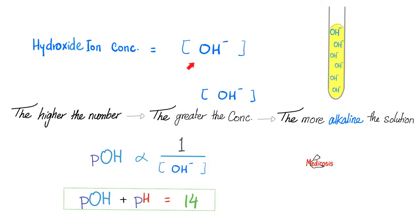Hydroxyl ion concentration. Well, the higher the number, the greater the concentration of hydroxide. And the more alkaline or basic the solution is. And just like the concentration of hydrogen ions was inversely related to the pH, similarly, the concentration of hydroxide ions is inversely related to pOH. And never forget that pH plus pOH always equal 14 for the same solution.